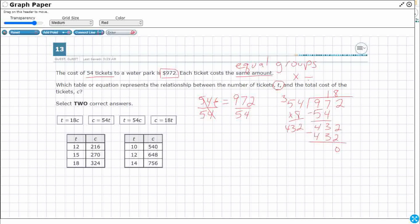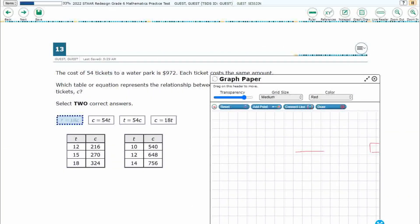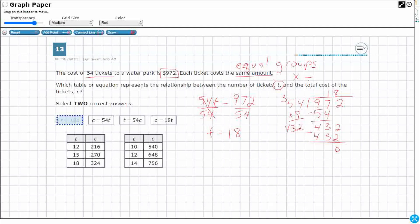Each ticket costs 18 bucks. Watch what I did. I've already got one answer here. Each ticket costs 18 bucks. T equals 18. So I've got that first one, tickets equals 18. So I can go ahead and put that one right there, because that C is the total cost of the tickets.